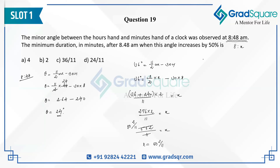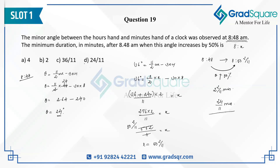From 8:48, the next time the angle increases by 50 percent is at 8 hours and 52/11 minutes. The difference is from 48 to 50 minutes, that's 2 minutes, plus another 2/11 minutes. Converting this: 11 into 2 is 22, plus 2 gives 24 by 11 minutes. So the answer is option D, which is 24/11 minutes.